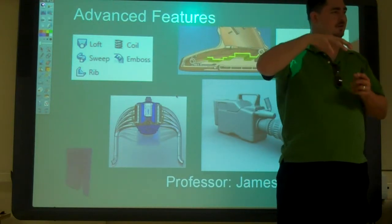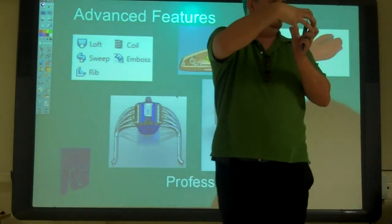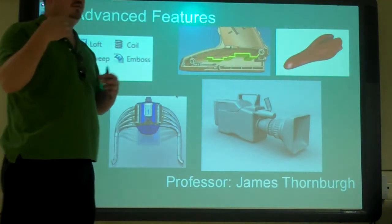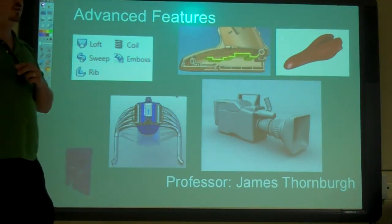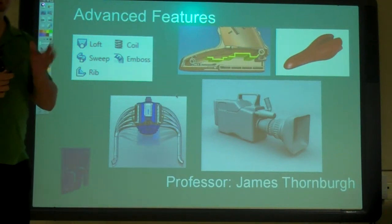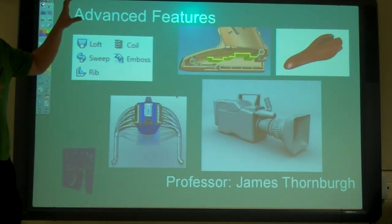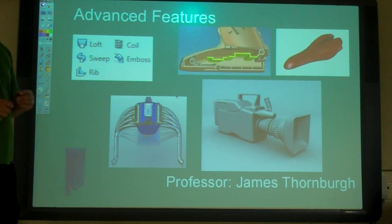So what you might do is when you are going to print out the part you would have it actually modeled and then you would suppress those features in order to just put cosmetic threads on it for the drawing. Because detailed threads or model threads on the drawing would be just way too much.